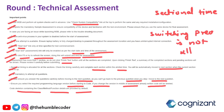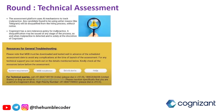I get all these questions regularly in the comments, so I've decided to create this guideline video to help all of you. The assessment platform uses an AI mechanism to track malpractice — any candidate found using unfair means like Telegram will be disqualified from the hiring process without notice. Cognizant has a zero tolerance policy for malpractice. For support, you will get resources in the email itself: system requirement details, MSB installation details, do's and don'ts, and FAQs.